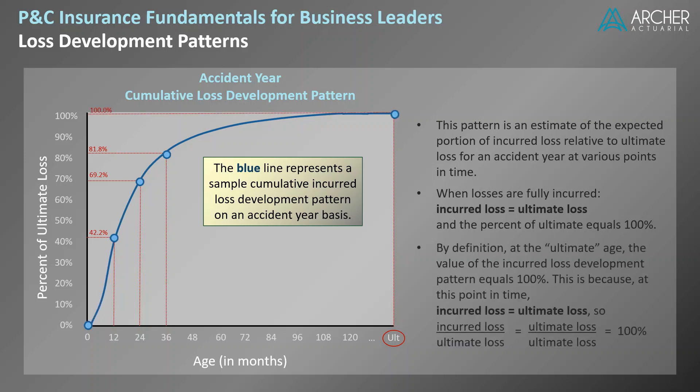By definition, at the ultimate age, the incurred loss development pattern equals 100%. This is because at this point in time, incurred loss equals ultimate loss. So the ratio of incurred loss to ultimate loss is really just the ratio of ultimate loss to ultimate loss — so it's 100%.